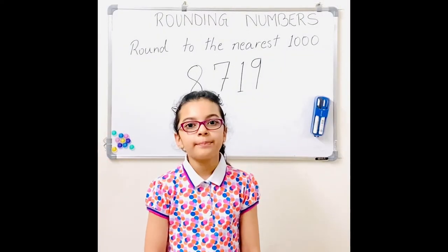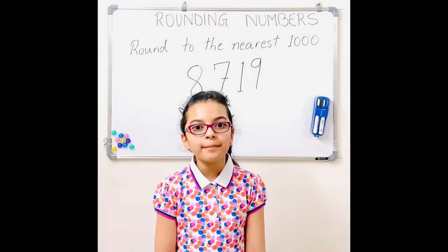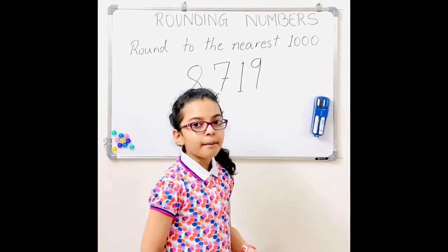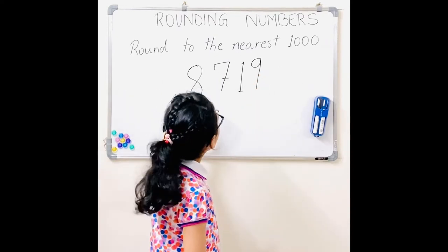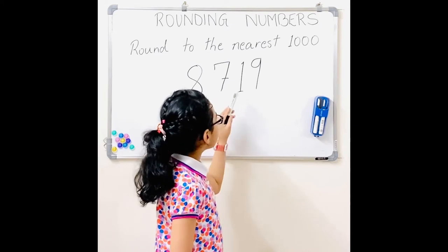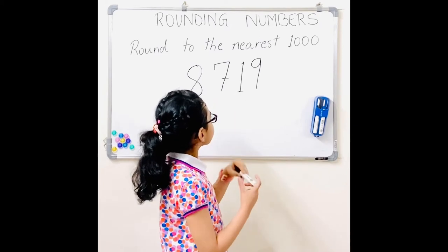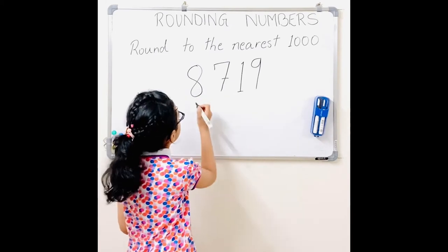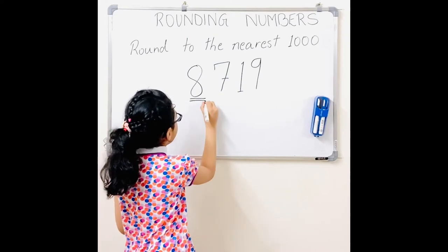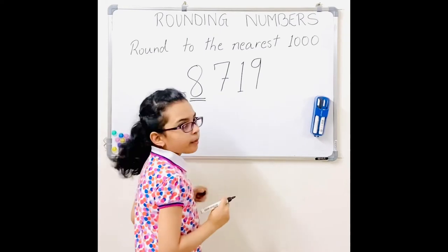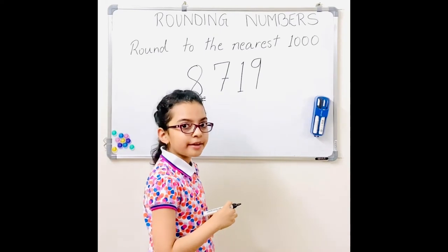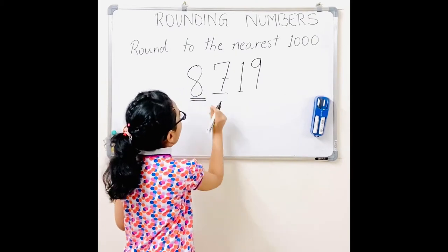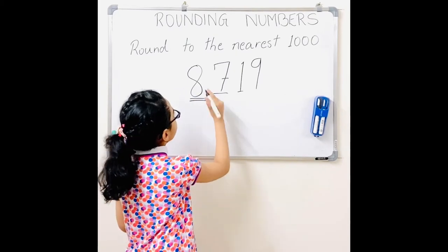Now that I've wiped the board, I'm going to tell you about rounding to the nearest thousand. This time my number is 8,719. So the digit in the thousands place is 8. But when we round to the nearest thousand, we check the digit in the hundreds place — and there it's a 7.